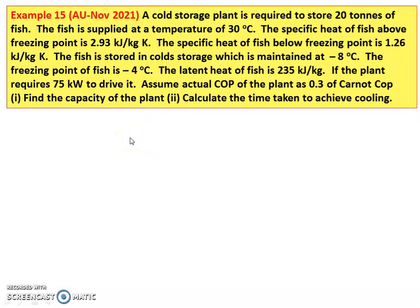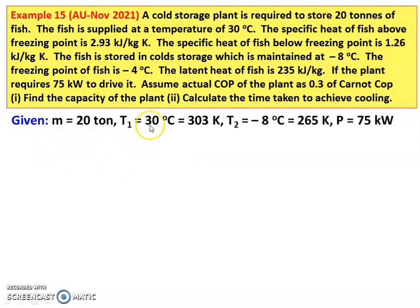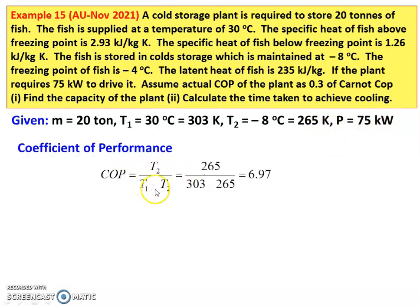The next question is from November 2021, Example number 15. A cold storage plant is required to store 20 tons of fish supplied at 30 degrees Celsius. The specific heat of fish above freezing point is 2.93 kilojoules per kilogram Kelvin, and below the freezing point is 1.26 kilojoules per kilogram Kelvin. The fish is stored at minus 8 degrees Celsius and the freezing point of fish is minus 4 degrees Celsius. Latent heat of fish is 235 kilojoules per kilogram. The plant requires 75 kilojoules per kilogram to drive it and actual COP is 0.3 times Carnot COP.